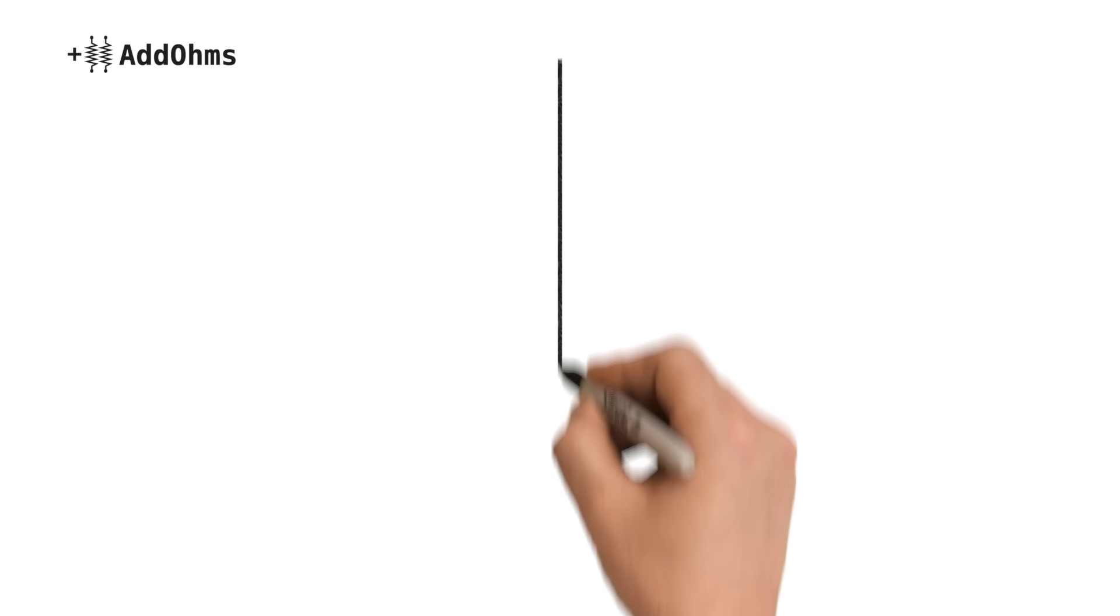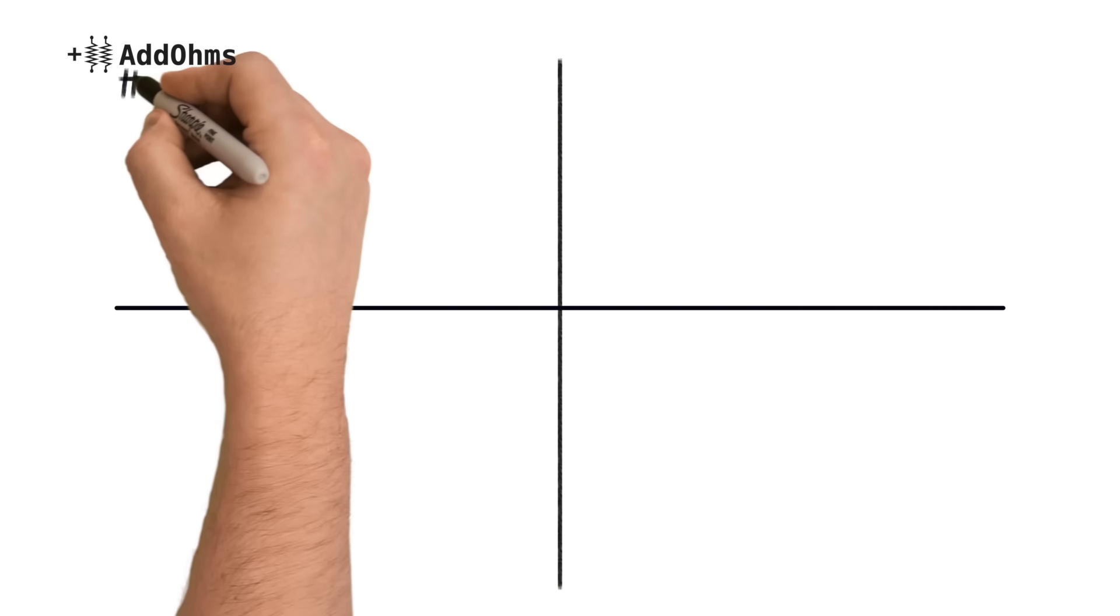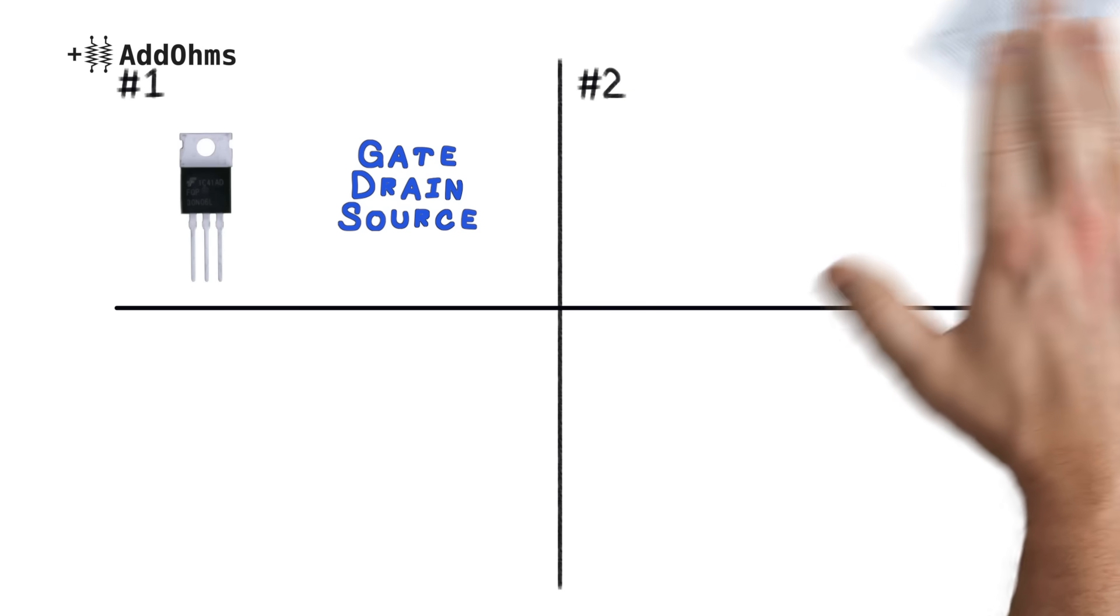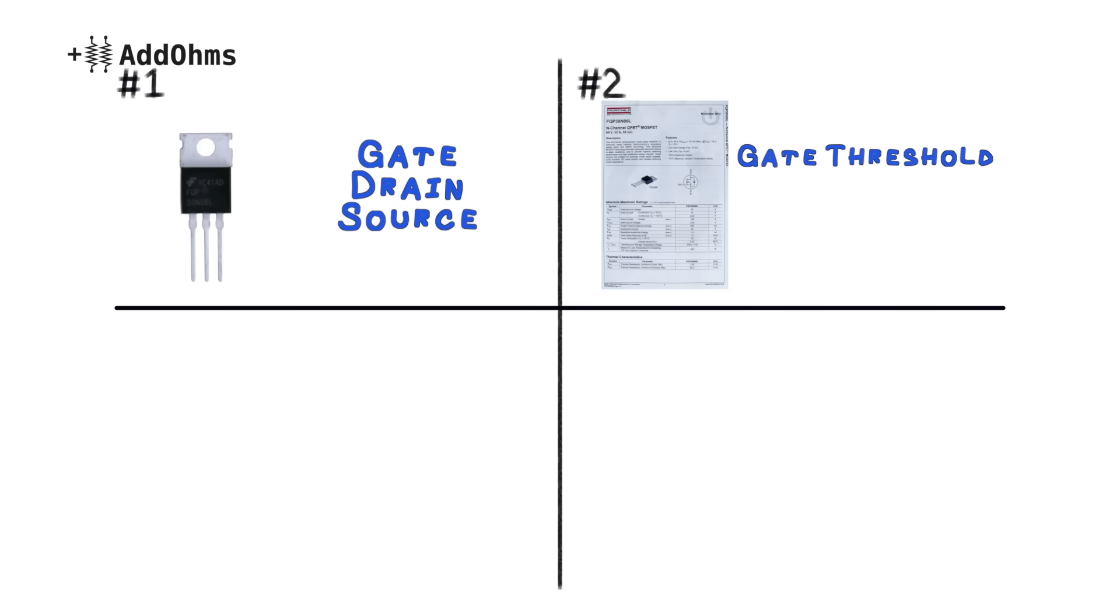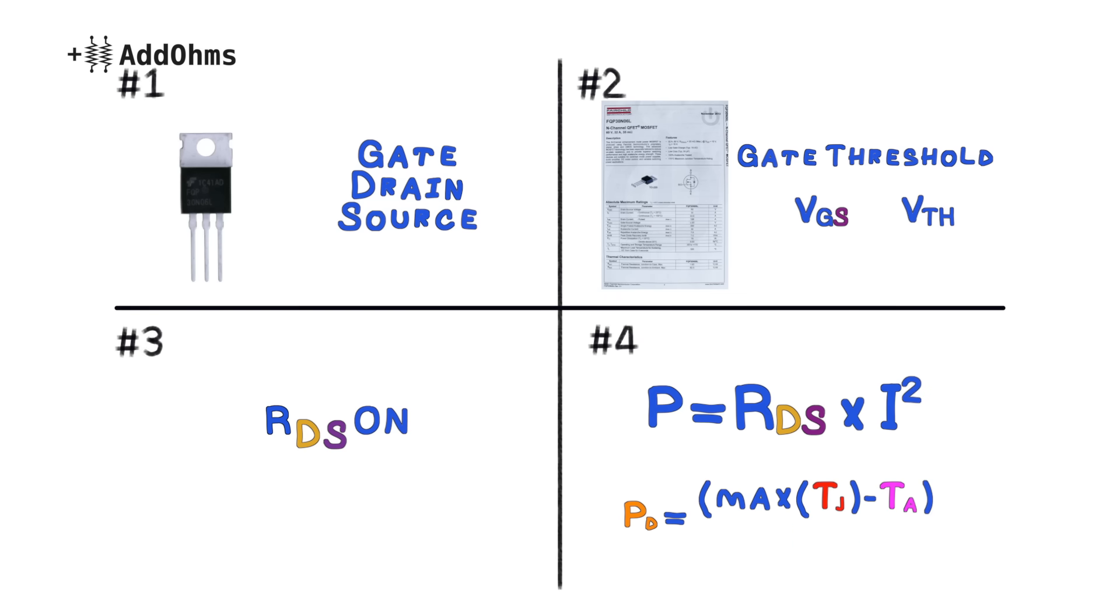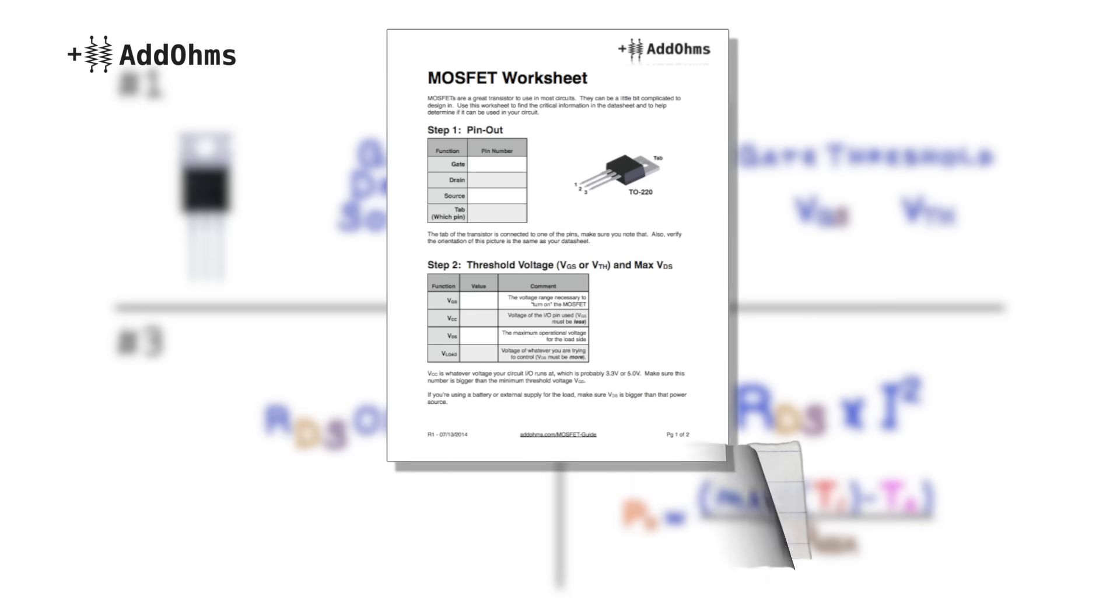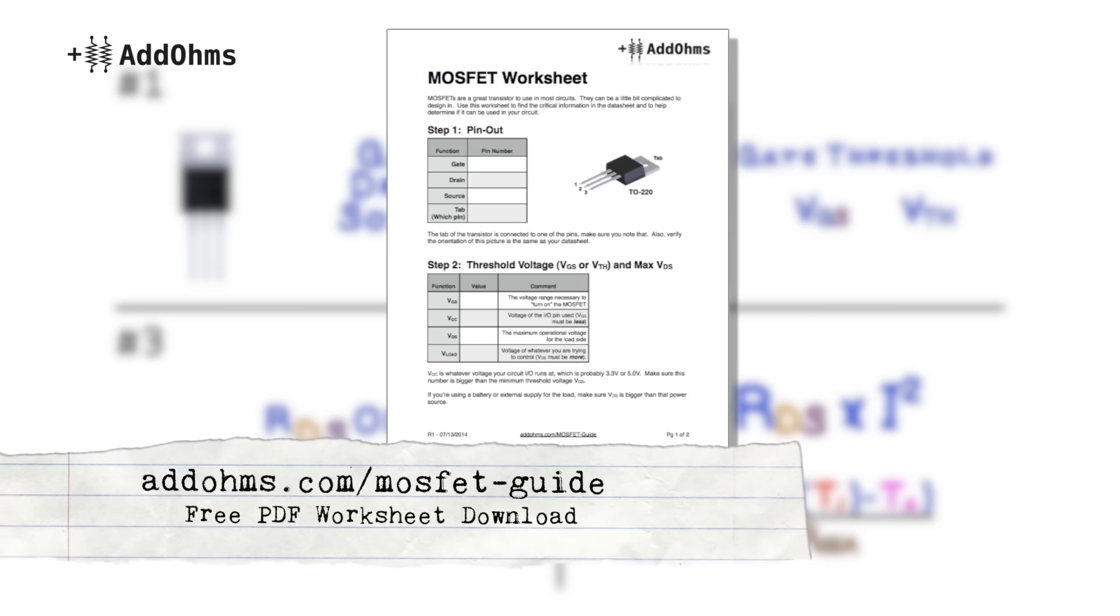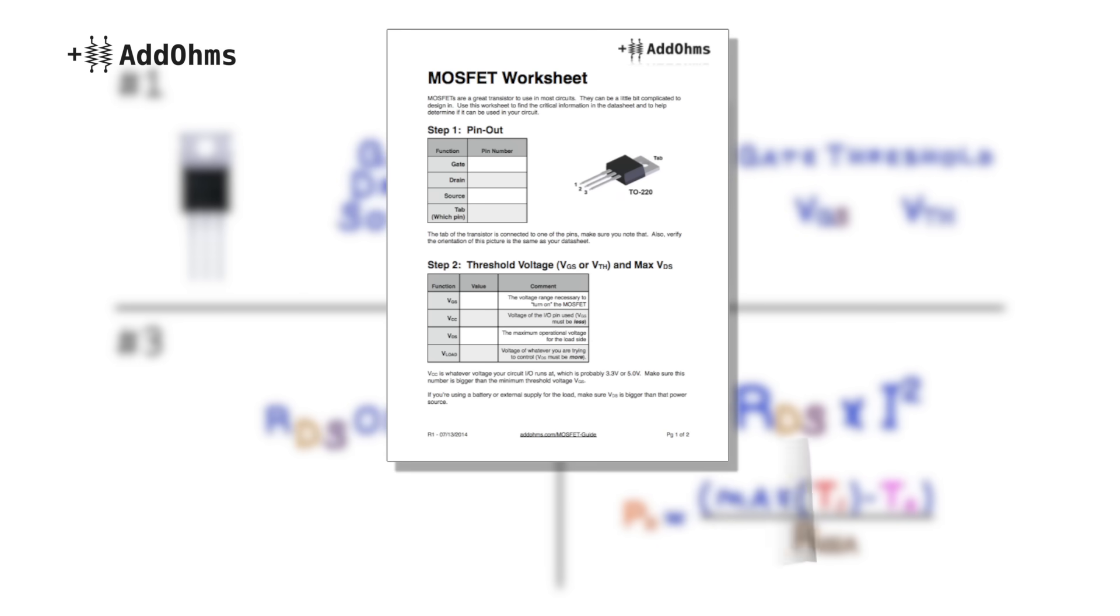Let's review what you need to know to use a MOSFET as a switch. Number one, find out which pin is the gate, drain, and source. Number two, look at the datasheet to determine the threshold voltage, which is shown as VGS or VTH. Number three, find the drain-to-source resistance, or RDS-ON. Number four, look at RθJA and the maximum junction temperature to calculate how hot the MOSFET will get. Visit AddOhms.com/MOSFET-guide, all lowercase, to download a simple PDF form you can use to calculate these parameters.